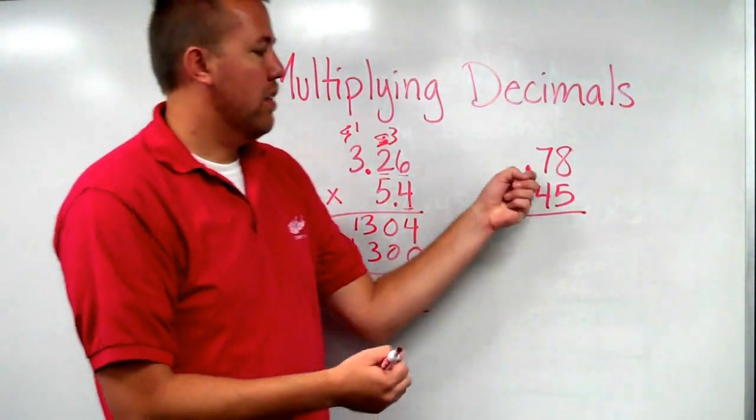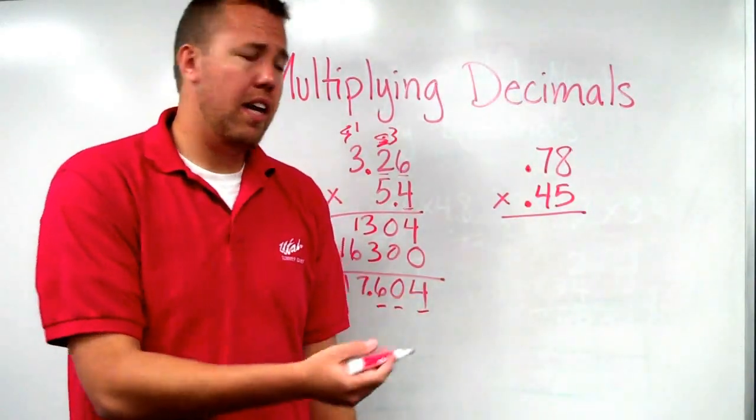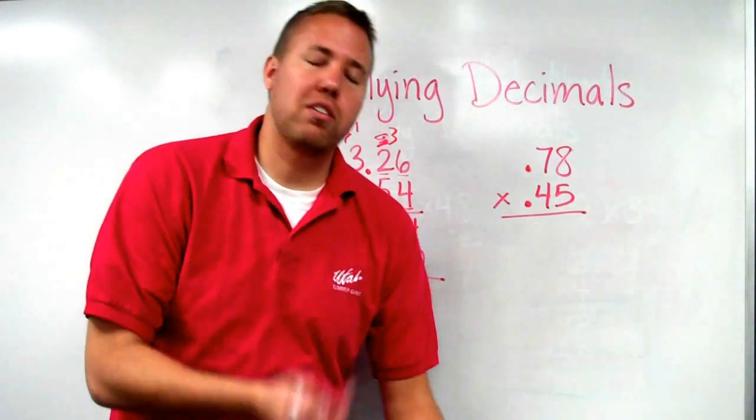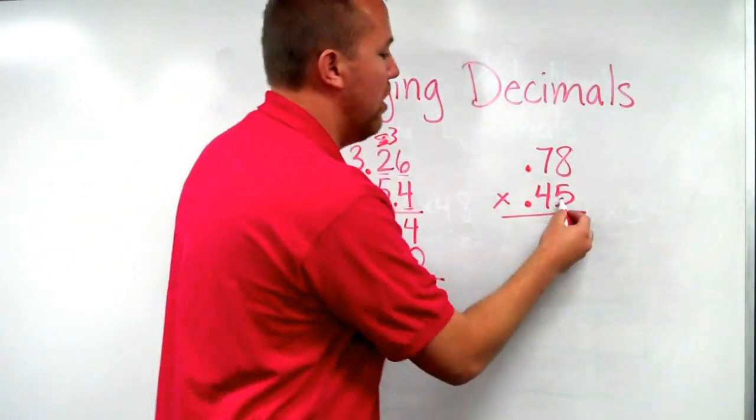Now, we have 0.78 times 0.45. Seventy-eight hundredths times forty-five hundredths. We are just going to, three words, ignore the decimals. And multiply just like we would.